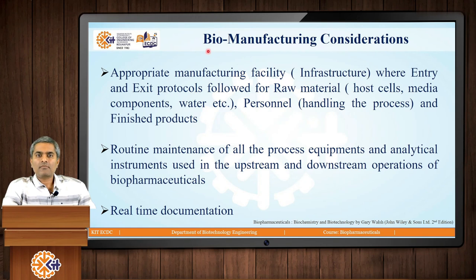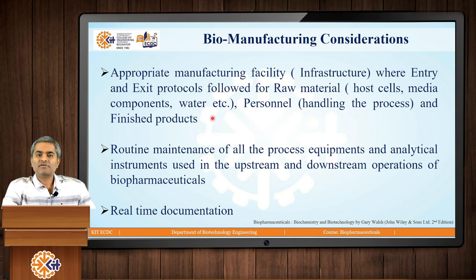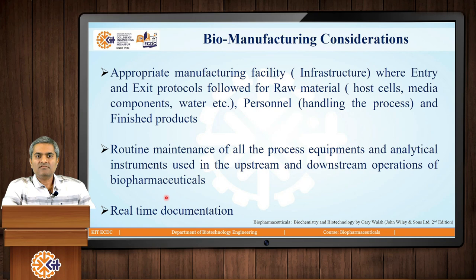When we talk about biopharmaceutical manufacturing, we need to consider three segments. Segment one is the appropriate manufacturing facility — the infrastructure — where we need to see the exact protocols for entry and exit of raw materials such as host cells, media components, and water, as well as personnel handling the process inside the premises and the finished products. The second segment is the routine maintenance of all process equipment and analytical instruments used in the upstream and downstream operations of biopharmaceuticals. The third, and very important, segment is real-time documentation, because quality audits will include documentation inspection.